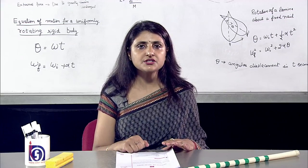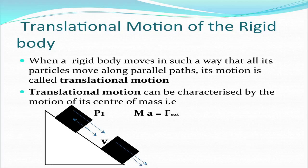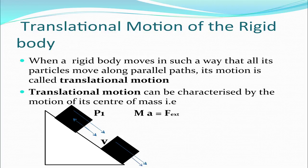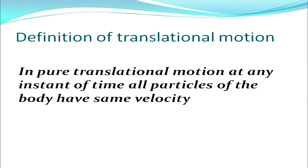Let's talk about the translational motion of a rigid body. As seen in the figure, there is a block sliding down with velocity v. A particle p1 remains the same relative position when the block slides down, moving with the same velocity v. When a rigid body moves such that all its particles move along parallel paths, its motion is called translational motion, and it can be characterized by mA equals F_external. In pure translational motion, at any instant of time all particles of the body have the same velocity.